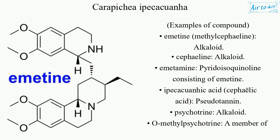Examples of compounds include: emetine, methylcephaline (alkaloid), cephaline (alkaloid), ametamine, and pyridoisoquinoline consisting of emetine and ipecaquanyic acid.